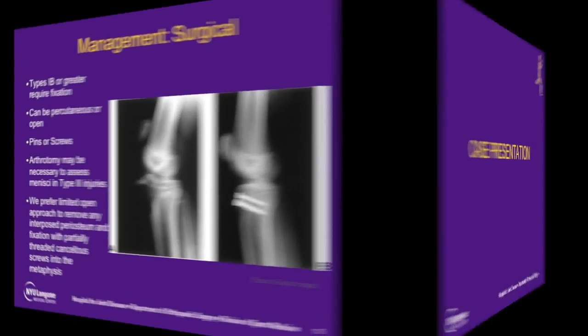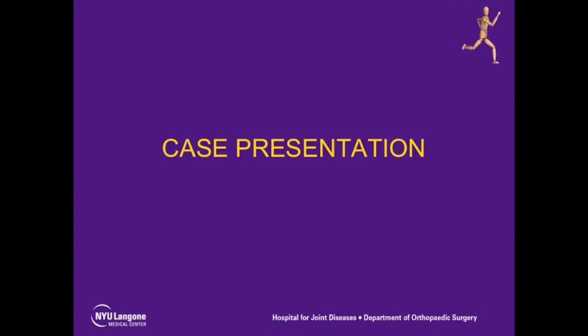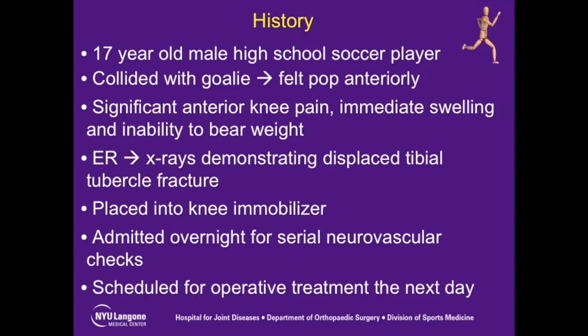For our case presentation, the patient is a healthy, active 17-year-old high school soccer player who, during a soccer game, collided with the goalie and felt a pop in the anterior aspect of his knee. Immediately following the injury, he had anterior knee pain and inability to bear weight. He was brought to the emergency room where x-rays showed evidence of a displaced tibial tubercle avulsion fracture. He was placed into a knee immobilizer and admitted overnight for serial neurovascular checks. The following day, he was brought to the operating room for operative management of his type 3a tibial tubercle avulsion fracture.